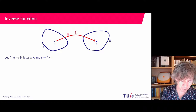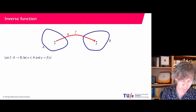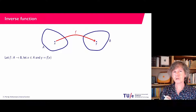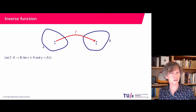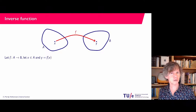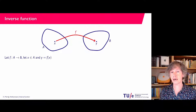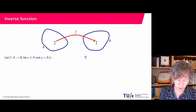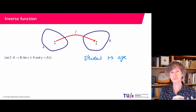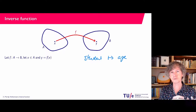Suppose we have a function f that goes from a set A to a set B, and in particular if we take an x in A it is being mapped to a y in B. Usually we work with numbers, but when we started talking about functions I already told you that it can also be, for instance, that set A is the set of all students currently studying calculus, and set B is how many years old you are — your age. So the function could map a student to his or her age.